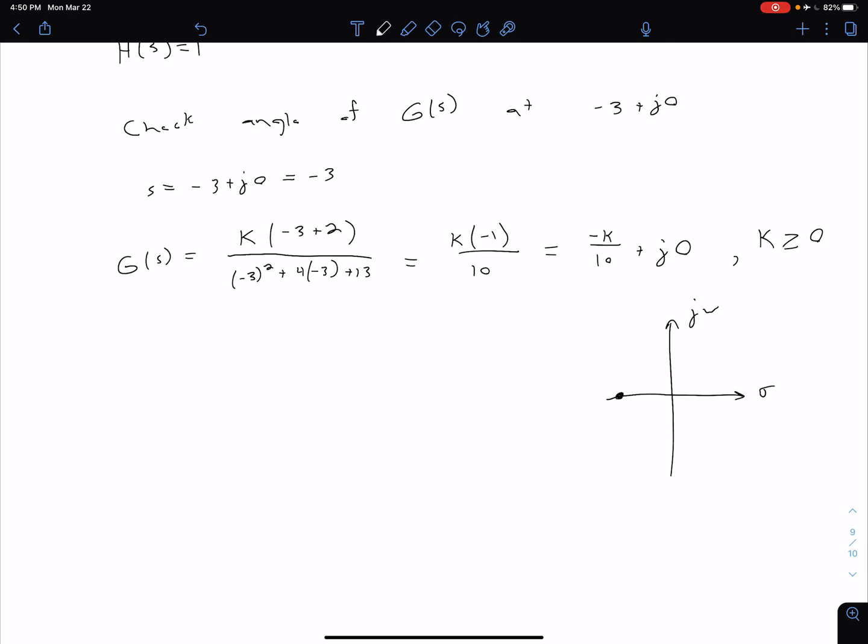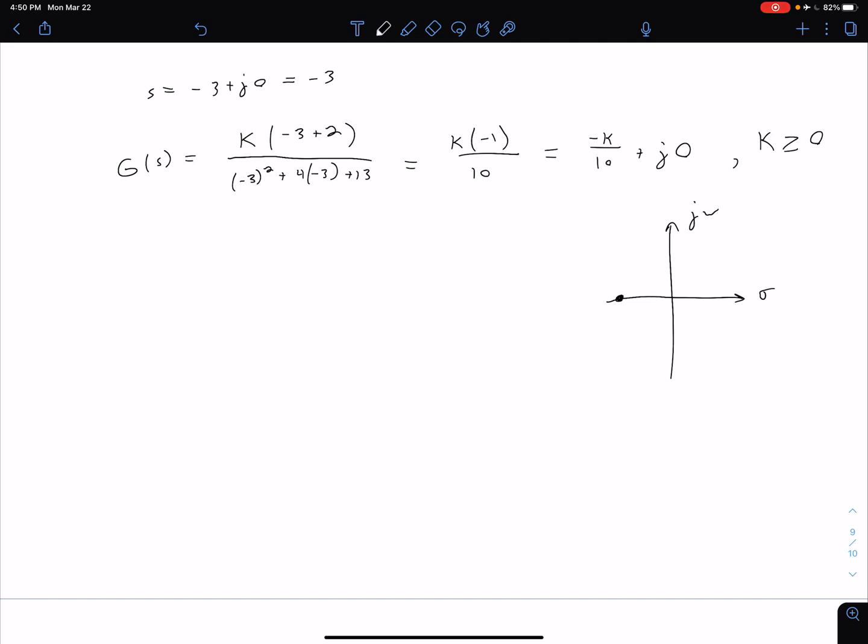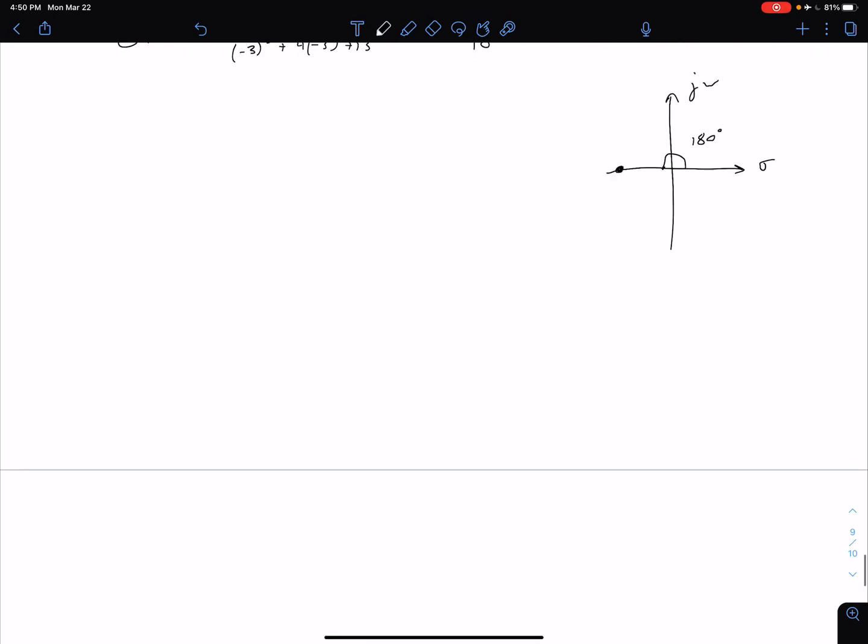We need to figure out what gain that's going to be, but we can see we have the appropriate phase angle of 180° or some odd multiple of 180°. Let's check the magnitude requirement from equation 3 on the previous video.